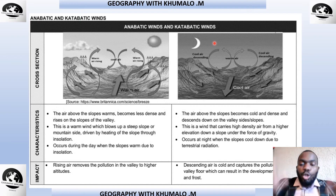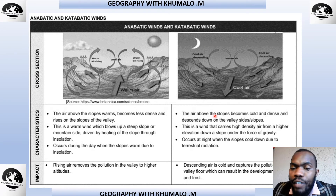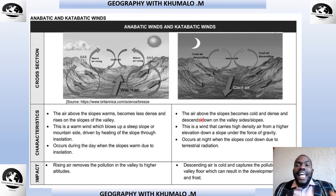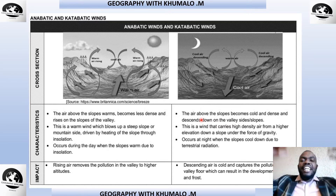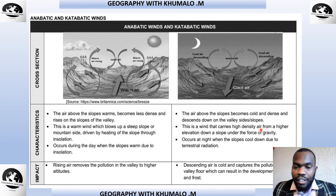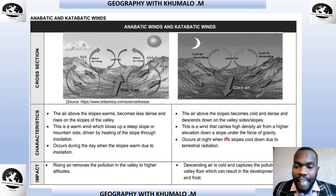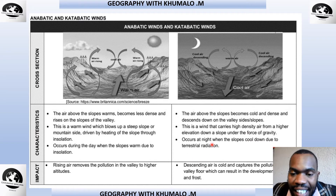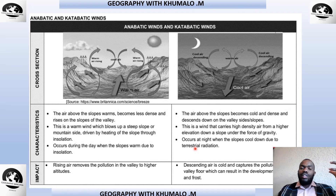The air above the slope becomes cold and dense at night, so it descends. Cold air is dominant at night and therefore descends down the valley slope or valley sides. This is a wind that carries high-density air from a high elevation down a slope under the force of gravity. It occurs at night when the slopes cool due to terrestrial radiation. During the day, terrestrial radiation causes air to move up; at night, the cold air is dense and blows down the valley slope.